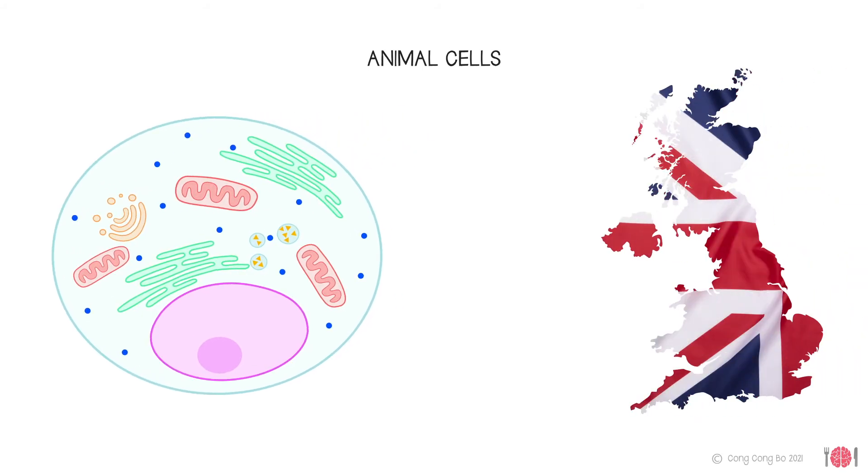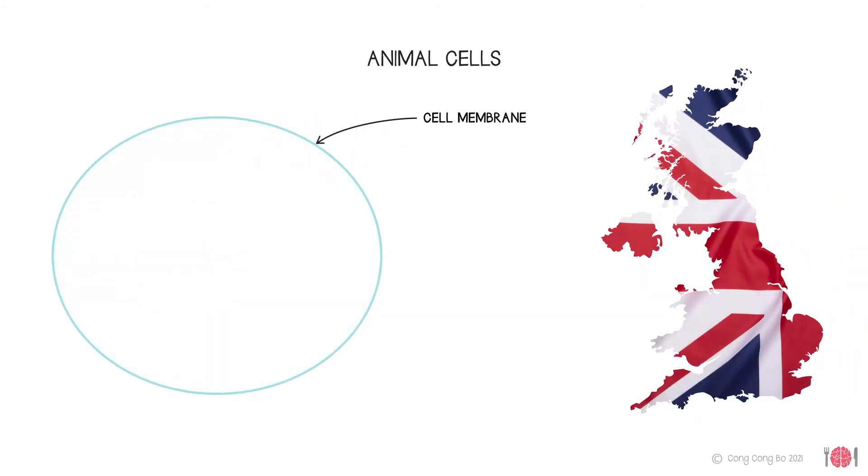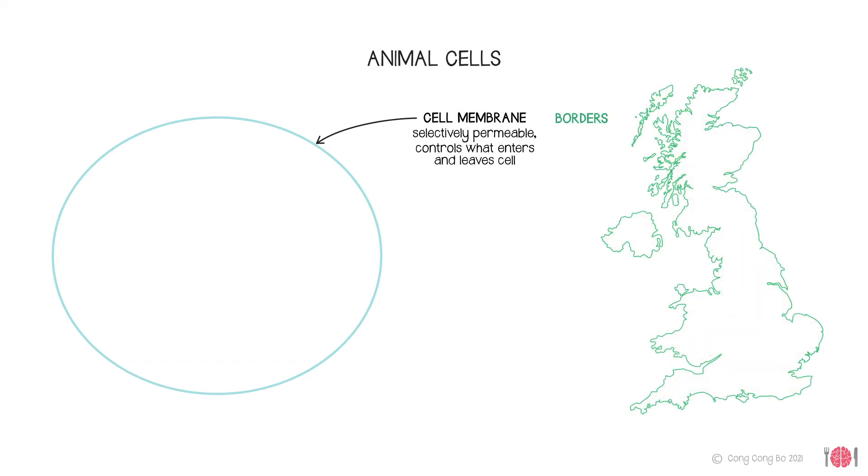The sac is called the cell membrane or plasma membrane. It is selectively permeable, meaning that it allows some substances to enter while excluding others. Continuing our country analogy, the cell membrane is like the country's borders, controlling what comes in or goes out. The cytoplasm is the fluid inside. It is predominantly water, with substances dissolved in it.